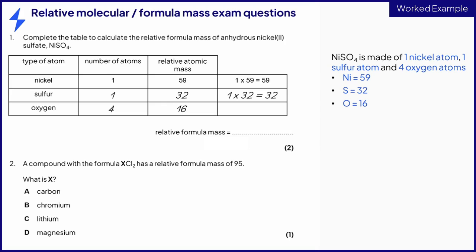And oxygen contributes a total mass of 4 times 16 or 64. The total mass of NiSO4 is therefore 59 plus 32 plus 4 times 16, which equals 155 for 2 marks.